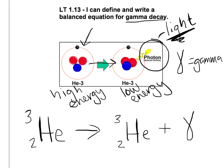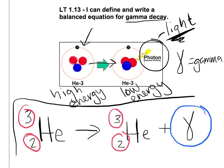A couple things to notice is that all these numbers stay the same, including the actual element we're looking at, and the only difference is the particle we write as the Greek letter gamma. So this is the balanced equation, and that is gamma decay.